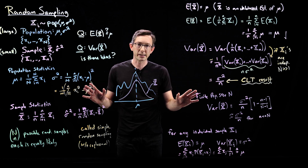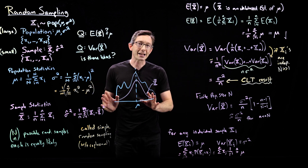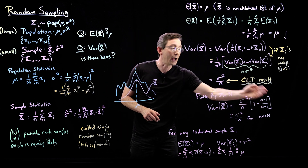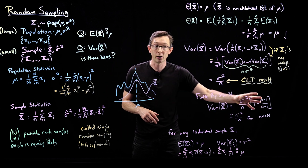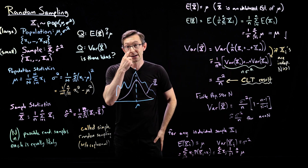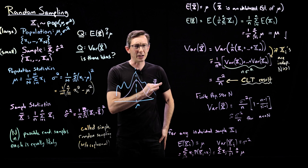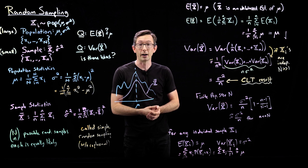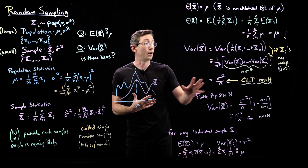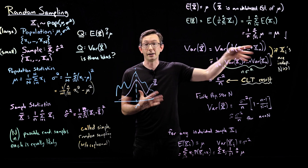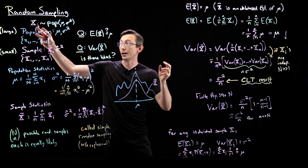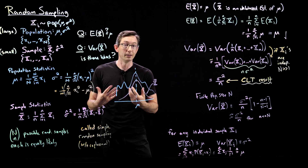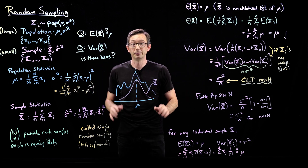In the next lecture — a technical one — I'm actually going to derive this finite-n correction to the variance of X-bar. It's pretty technical and you can probably skip it if you like, but if you want to know where it comes from, I'll write it out in terms of the covariances for the shrinking without-replacement population. Thank you.